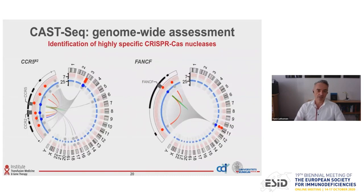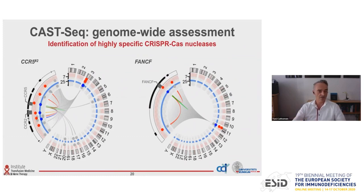It is possible to design highly specific CRISPR-Cas nucleases. We made a second one targeting CCR5 — again we have a lot of noise around the on-target site indicating deletions and inversions, but no translocations above background. The same was true for another nuclease targeting FANC-F — no translocations, just noise around the on-target site.